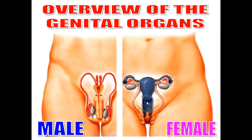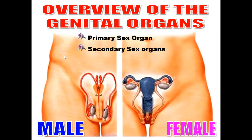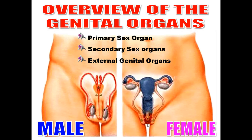This is the male genital system and this is the female genital system. Each system is formed of a primary sex organ. The primary sex organ in the male is the testis, and in the female it is the ovary. Secondary sex organs or genital ducts in the male include the epididymis, vas deferens, seminal vesicle, ejaculatory duct, prostate gland, bulbo-urethral glands, and the urethra. In the female: uterine tube, uterus, and vagina. The external genital organ in the male is the penis, and in the female it is the vulva.